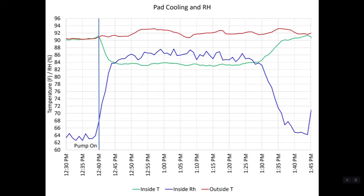One last point on this chart. When you look at the incoming temperature and humidity, it looks like the pads were turned off around 1:30, and the temperature started going up and the humidity started falling. The fact is the pads were actually turned off at 1:15 p.m. and continued to produce essentially the same amount of cooling for 10 minutes — which we've seen on a number of farms — that during hot and humid weather, once a pad is wet, it will continue to produce the same amount of cooling for about 10 minutes.